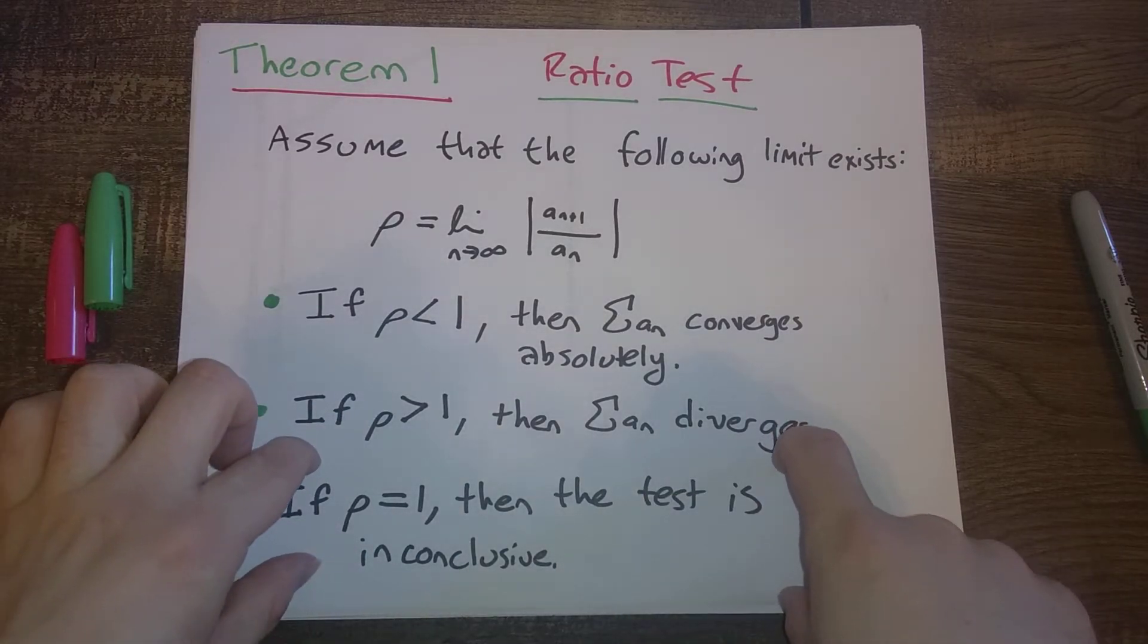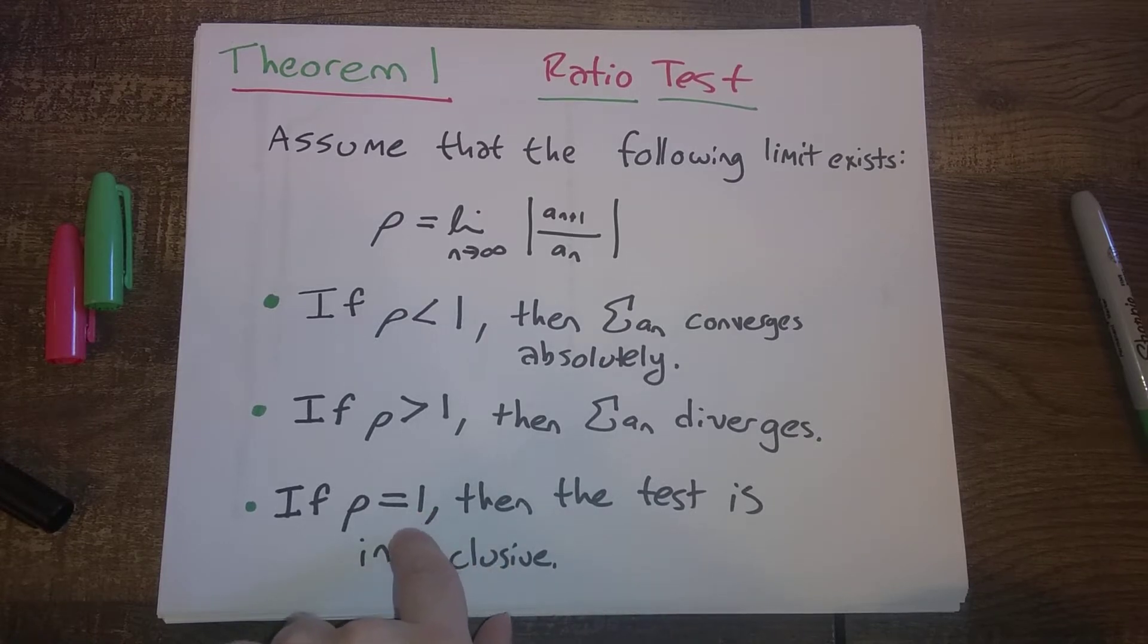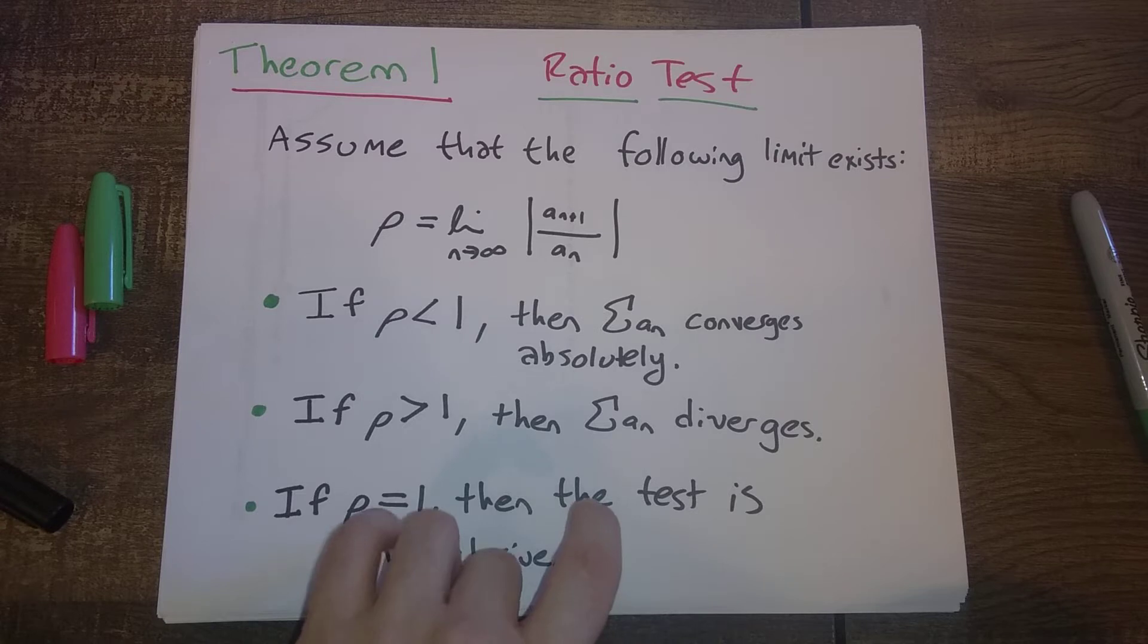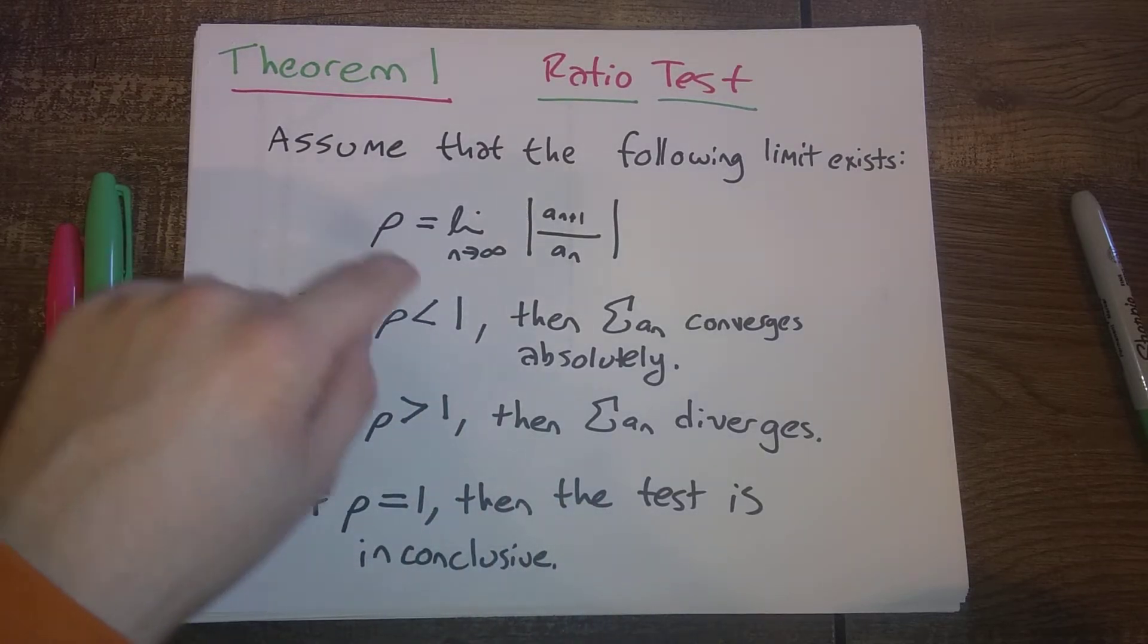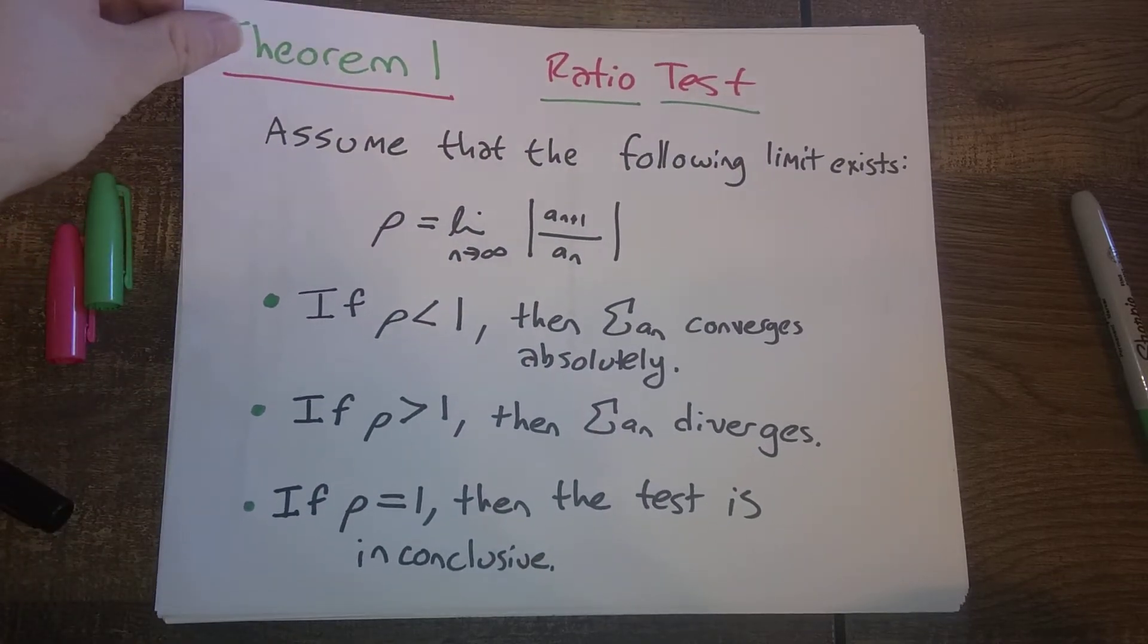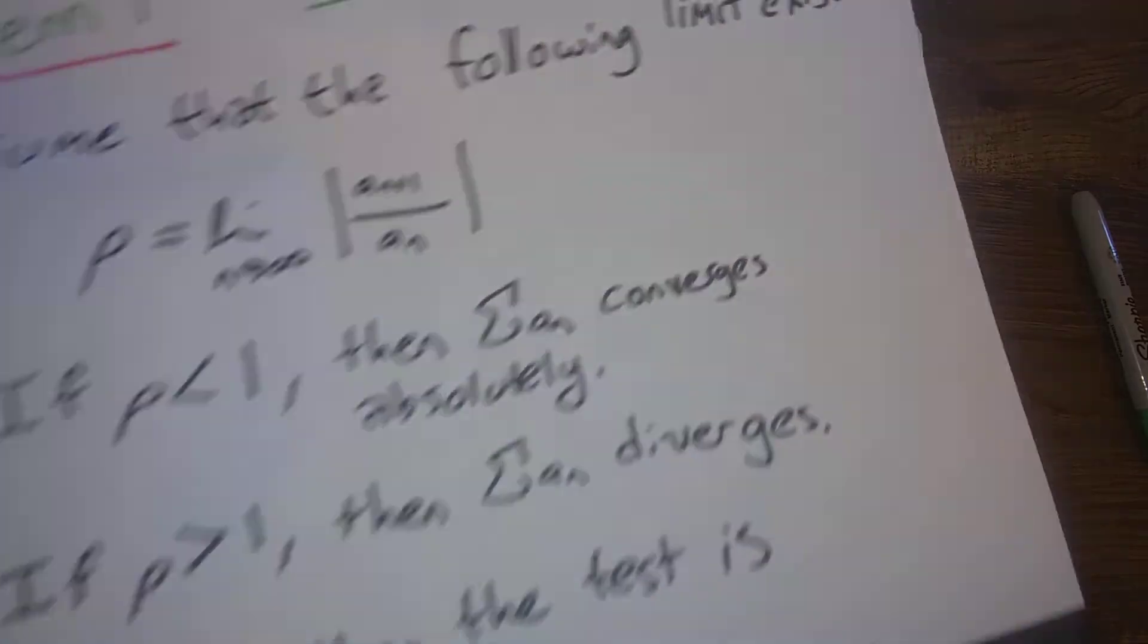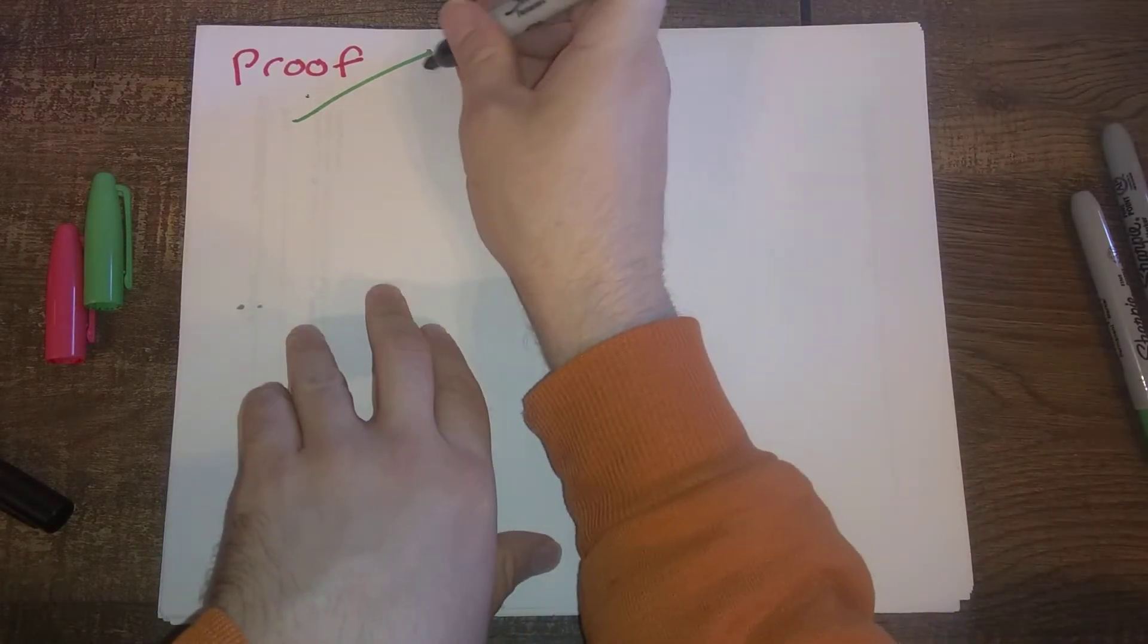We already know we saw the example previously of two different series that have ρ equal to 1, and one of them converges, one of them diverges. So that takes care of this last case. The things we have to prove are these two cases: that ρ is less than 1 and our series converges absolutely, and if ρ is strictly bigger than 1, our series diverges. So how do we do this?